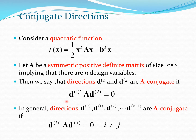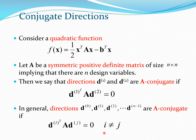Generalizing this concept, if we have search directions d0, d1, d2, all the way to d_{n-1}, they are A-conjugate if d_i^T A d_j = 0 for i not equal to j.